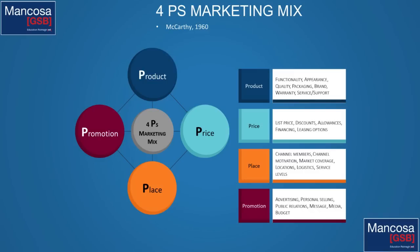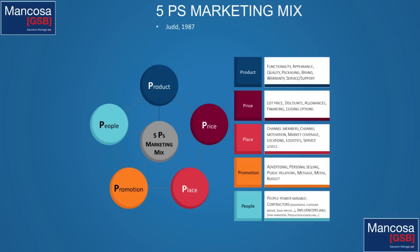In the 4P model, the fourth element is promotion — advertising, personal selling, etc. The 5P model added 'people,' done by Judd in 1987. People is obviously important: even in a purely product-driven company, people make the product and you're selling to people. You look at your staff: are they the right people to serve those consumers and customers? Do you have the right people to build your company properly? This is why it's crucial to integrate throughout your entire company — if HR doesn't understand the vision of your brand or what's important to your customers, they won't hire the correct people.